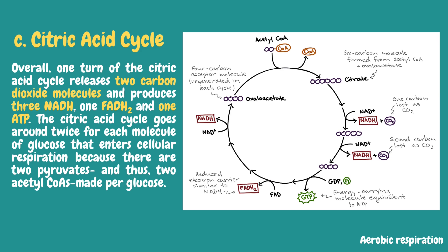The remaining 4-carbon molecule undergoes additional reactions: first making an ATP molecule (or in some cells a similar molecule called GTP), then reducing the electron carrier FAD to FADH2, and finally generating another NADH. This regenerates the starting molecule, oxaloacetate, so the cycle can repeat. Overall, one turn of the citric acid cycle releases two carbon dioxide molecules and produces 3 NADH, 1 FADH2, and 1 ATP. The citric acid cycle goes around twice per glucose molecule, because two acetyl-CoA molecules are made per glucose.